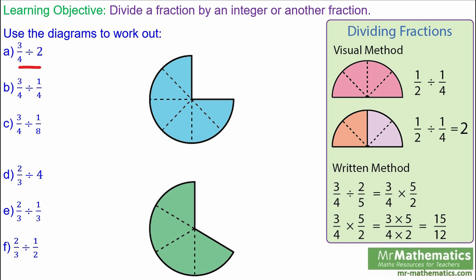We've got three quarters of a circle. We're going to split it in half, which is dividing by two. You can see you've got three segments within this half: one, two, three. Each segment is one eighth of the entire circle, so you've got three eighths in total.